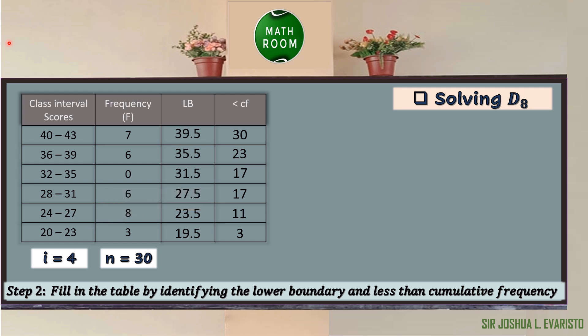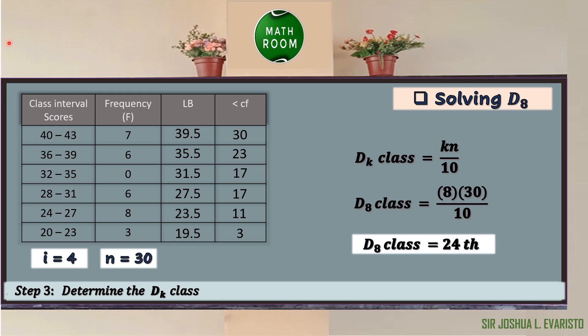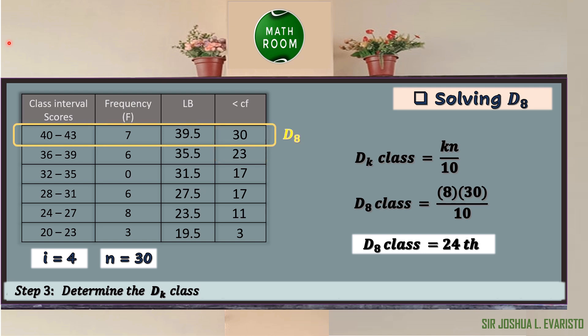We now determine the D sub k class before computing D sub k. D sub k class equals k times n over 10. Substituting: D sub 8 class equals 8 times 30 over 10, since k equals 8 and n equals 30. So 8 times 30 equals 240, divided by 10, gives us 24. Since 24 is between 23 and 30, we choose the higher value, 30. Hence, the D sub 8 class is found in the sixth class.